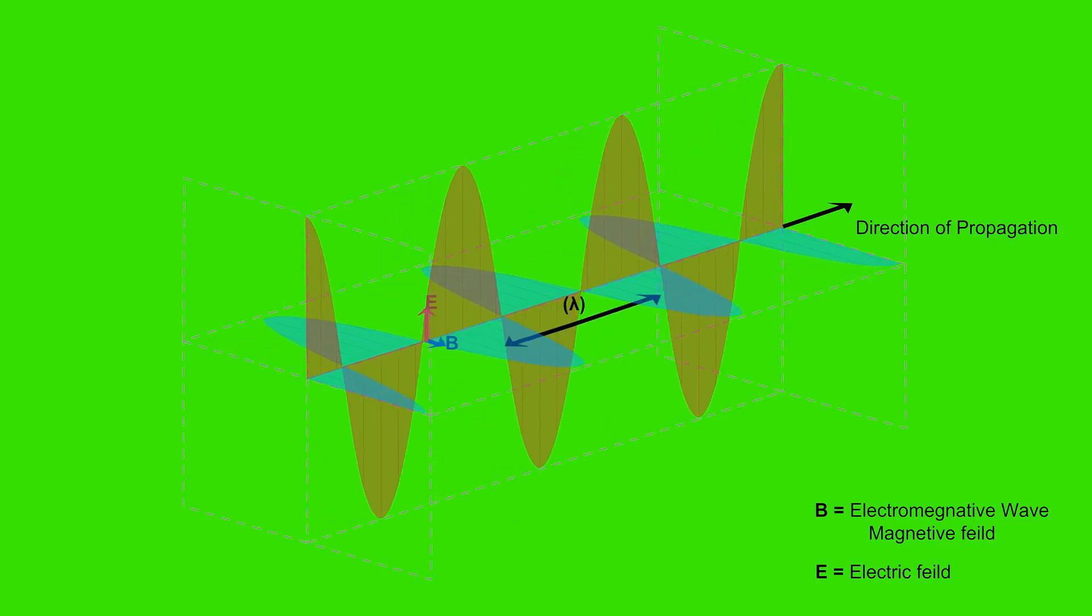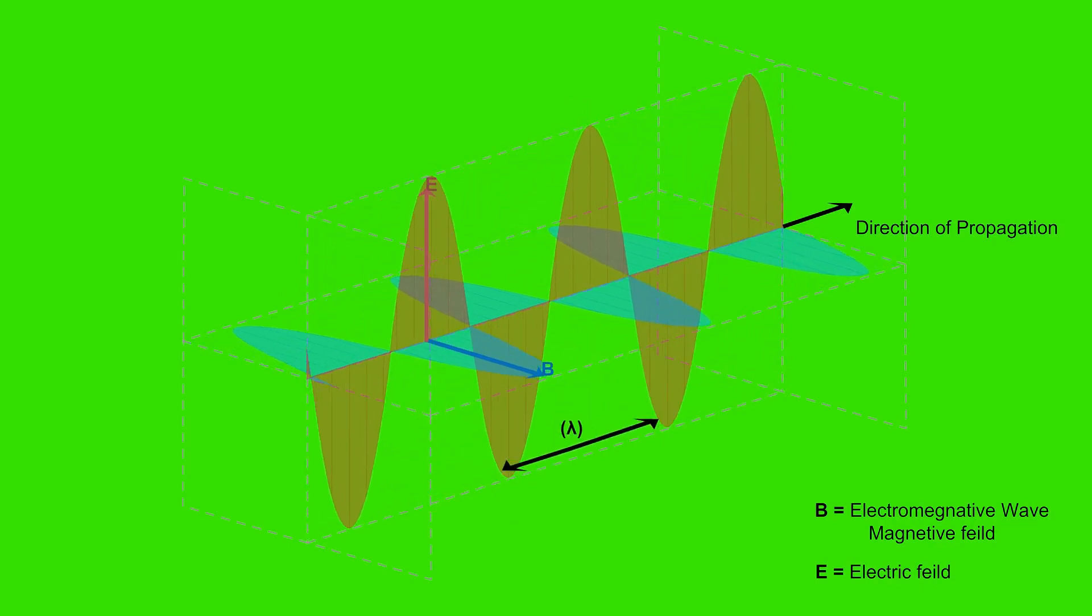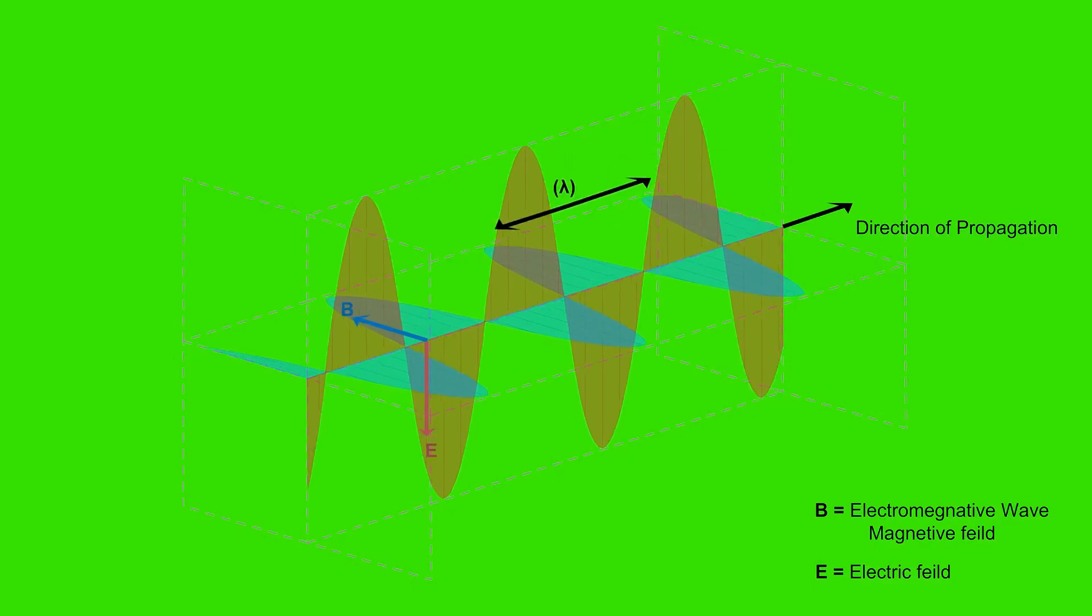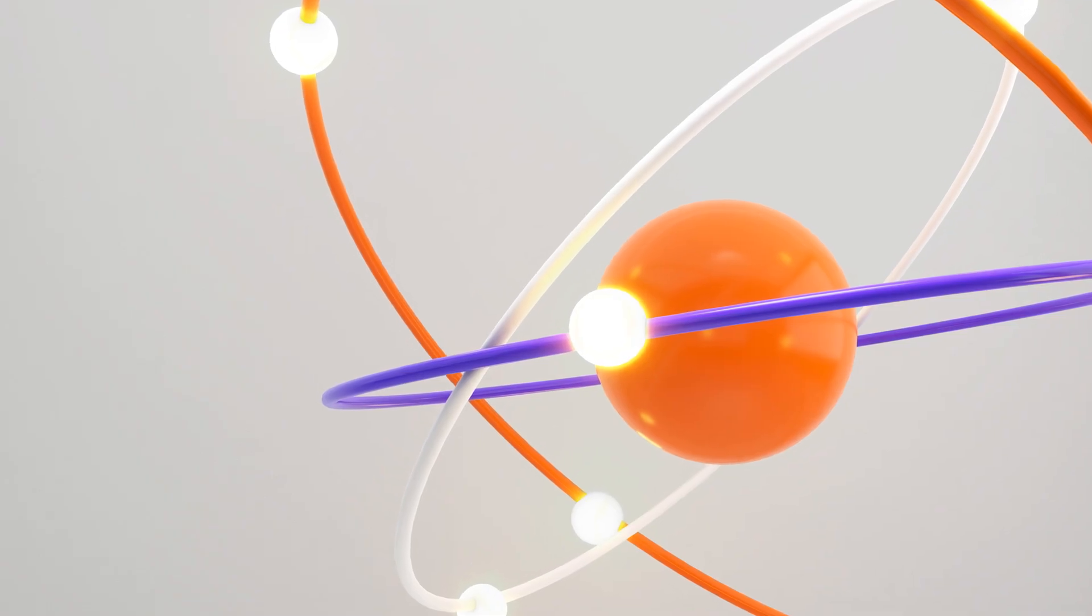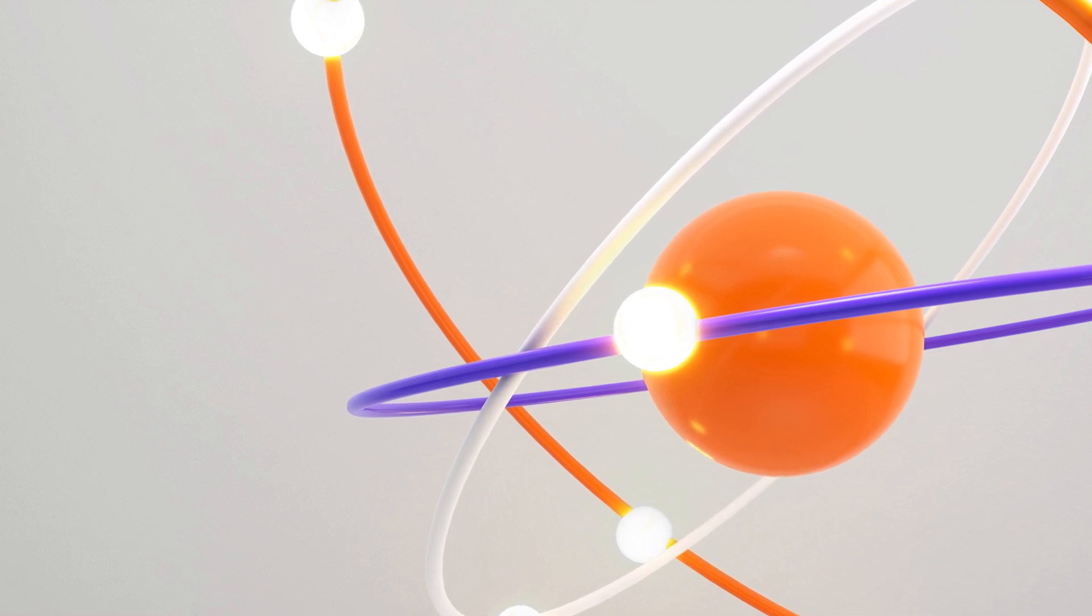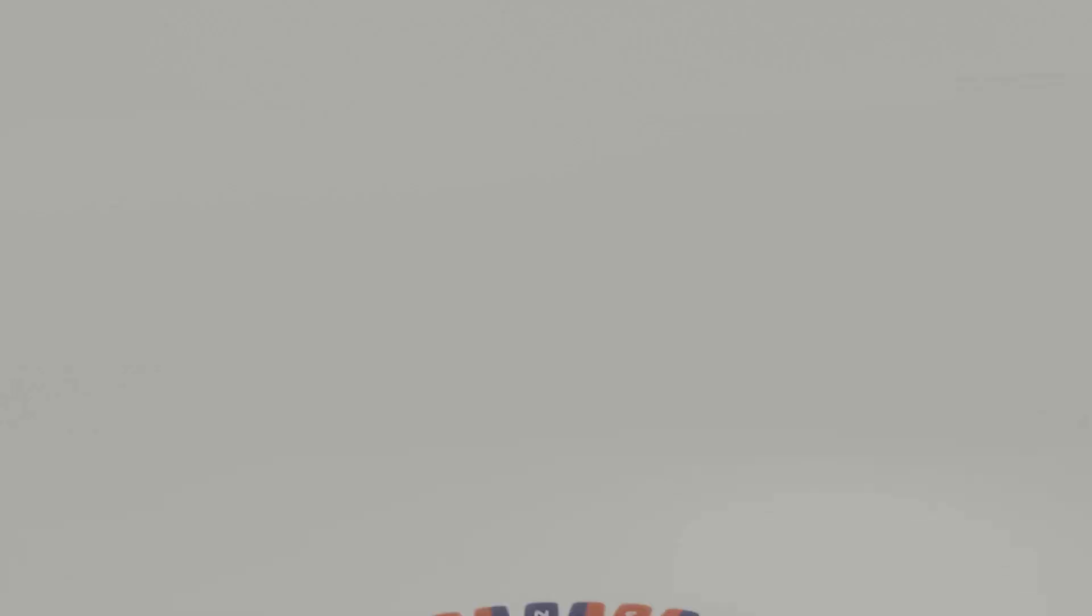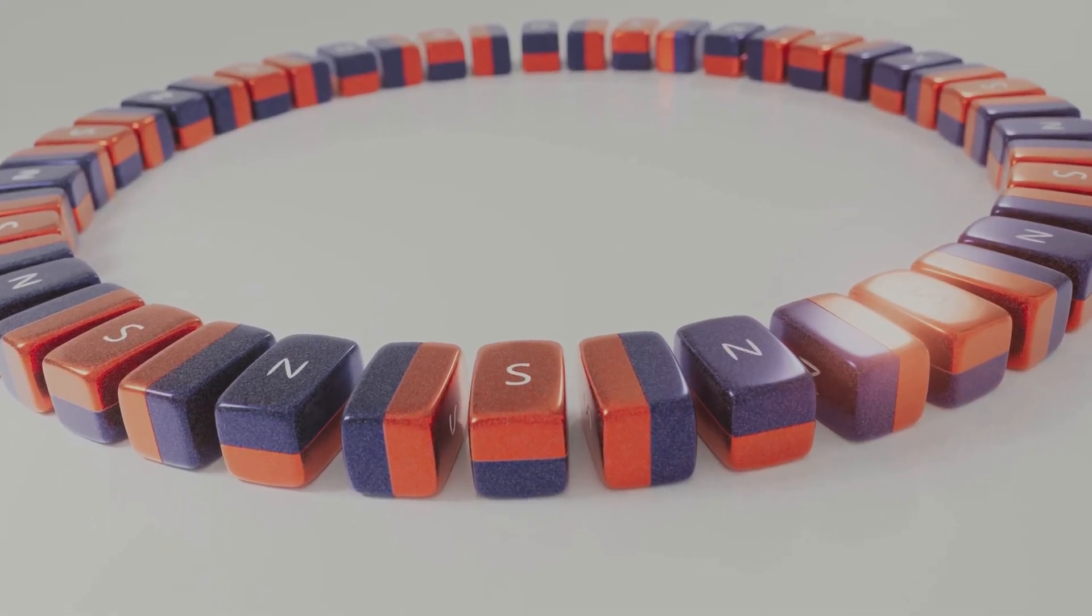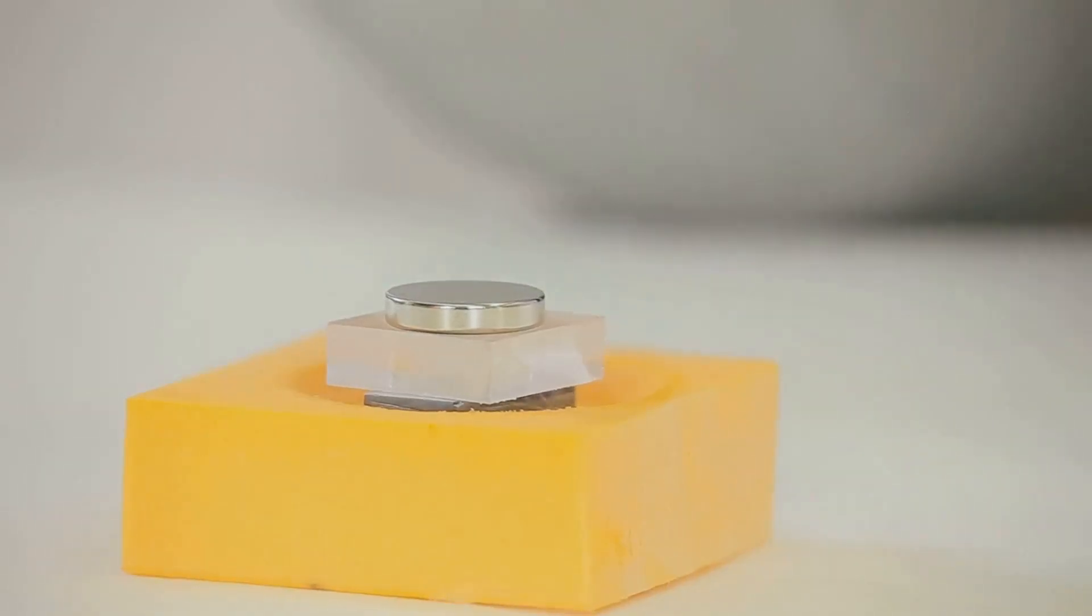Central to the dark charge hypothesis is the concept of dipoles, a fundamental arrangement of positive and negative charges within particles. This dipole nature could hold the key to understanding the strong force and the stability of atomic nuclei. Imagine two tiny magnets, one with a north pole and the other with a south pole. When brought close together, they attract each other, their opposite poles locking them in a stable configuration.